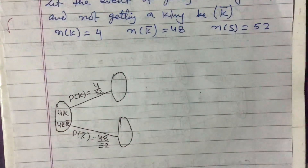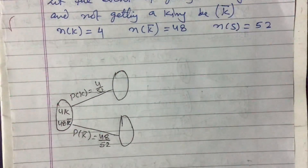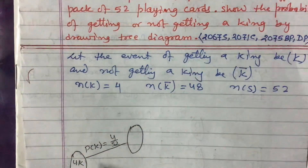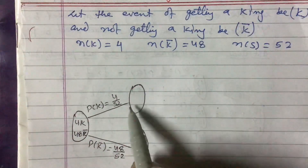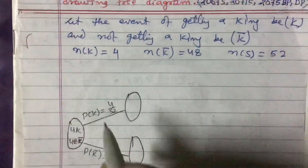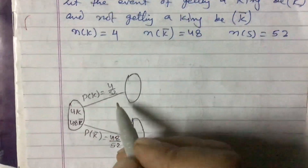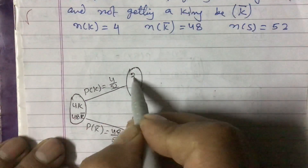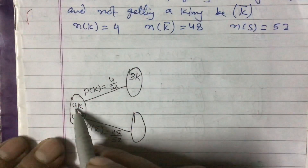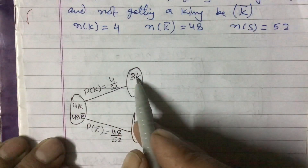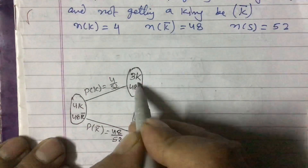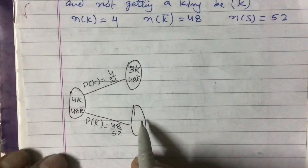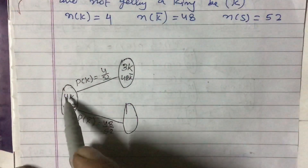Now look here — there are two cases: whether the card drawn first is replaced or not replaced. Here the question says without replacement, meaning the card drawn is kept outside the packet. If you draw a king first and do not replace it, then the remaining kings will be only 3 — there were 4 kings and one has been taken out. The 48 other cards remain as they are, so the total number of cards is now only 51.